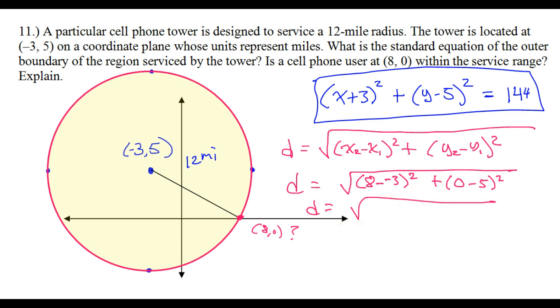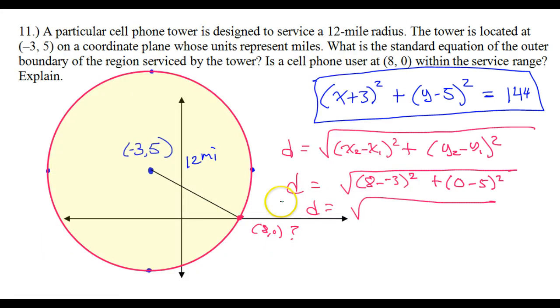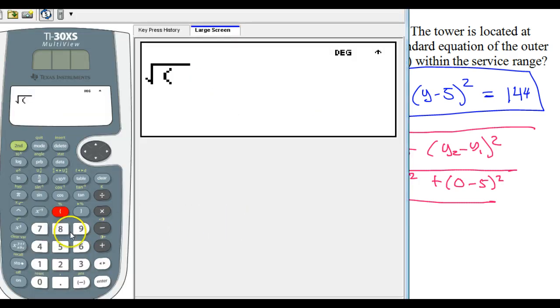Now, you could type this whole thing in your calculator, just to make a point. If you're good at your calculations, it might be easier just to do it by hand. Let's see, 8 minus negative 3, so I've got 8 minus negative 3.